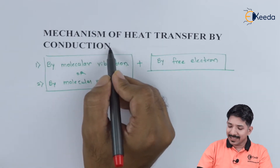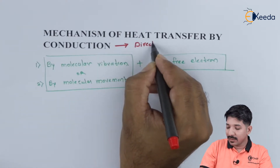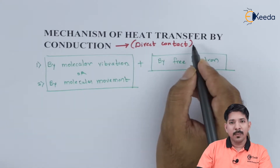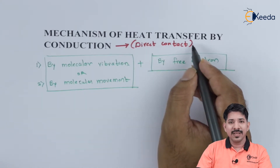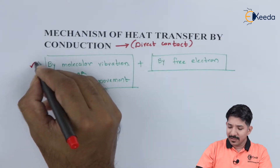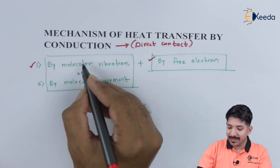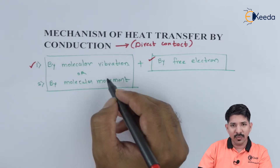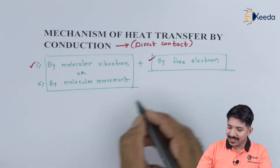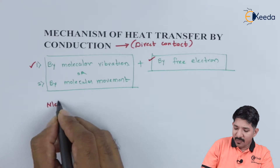Conduction is the heat transfer due to direct contact. So if there is a direct contact between two bodies, most probably we will have heat transfer by conduction only. Microscopically, there are two ways by which heat transfer may take place: the first one is molecular vibration or molecular movement, and the second one is by free electrons. In solids we have metals,